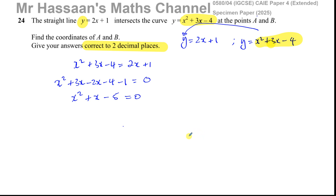The quadratic formula is given in the formula sheet on the second page of the paper. For ax squared plus bx plus c equals 0, x equals minus b plus or minus the square root of b squared minus 4ac, all over 2a. In our equation x squared plus x minus 5 equals 0: a equals 1, b equals 1, and c equals negative 5. We made it equal zero so we could apply this formula.